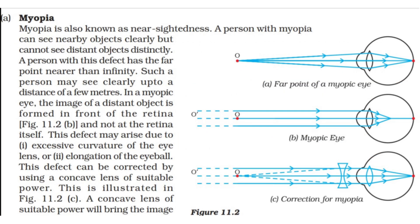The first defect is myopia, also known as nearsightedness. A person with myopia can see nearby objects clearly but cannot see distant objects distinctly. Such a person has the far point nearer than infinity and may see clearly only up to a distance of a few meters; beyond that, they cannot see objects properly.